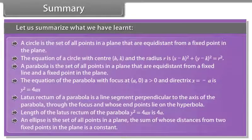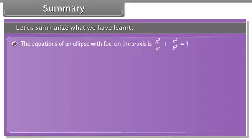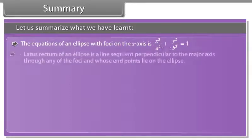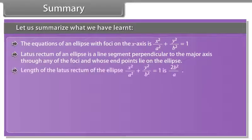An ellipse is the set of all points in a plane, the sum of whose distances from two fixed points is a constant. The equation of an ellipse with foci on the x-axis is x²/a² + y²/b² = 1. Latus rectum of an ellipse is a line segment perpendicular to the major axis through any of the foci, whose end points lie on the ellipse. Length of latus rectum of x²/a² + y²/b² = 1 is 2b²/a.